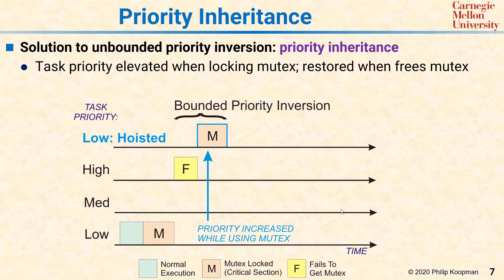It doesn't get hoisted all the way to the highest priority in the system. It just needs to be the same or the same plus one of the high priority task. That means tasks even higher than the high priority task still get to run — they aren't delayed. But all the tasks below the high priority task have to wait for this mutex to be released, including that pesky medium priority task.